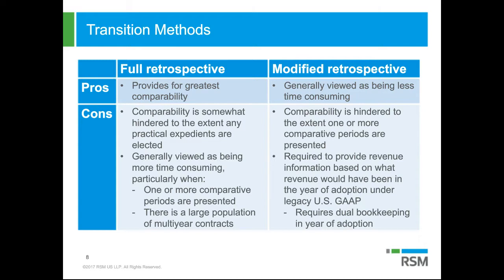The cons: there's some hindrance to the extent that practical expedients are elected — there are a number of practical expedients under this standard — although that may not be all that significant. The larger concern is that this methodology is more time-consuming. You do have to go back and restate all of your contracts under 606, and this is not just a revenue standard — costs are impacted as well. A number of different IT systems may have been used, and information may have been aggregated in different ways in prior periods, making this full retrospective approach more involved.